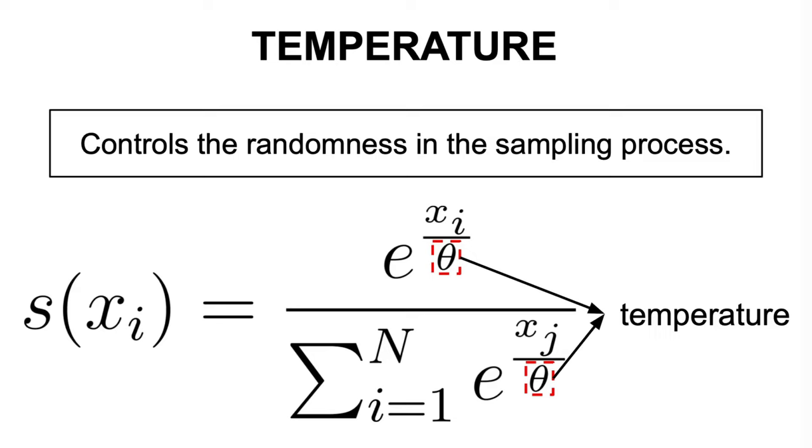More concretely, what the temperature is doing is dividing by a parameter theta in the exponent that we specify before the text generation starts. Thus, the temperature parameter scales the logits before applying the softmax, affecting the steepness of the resulting probability distribution.